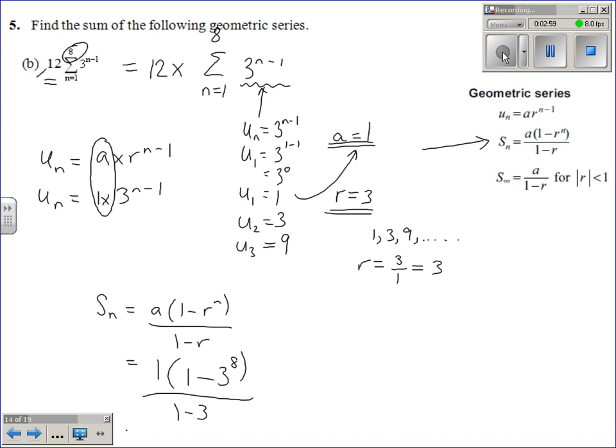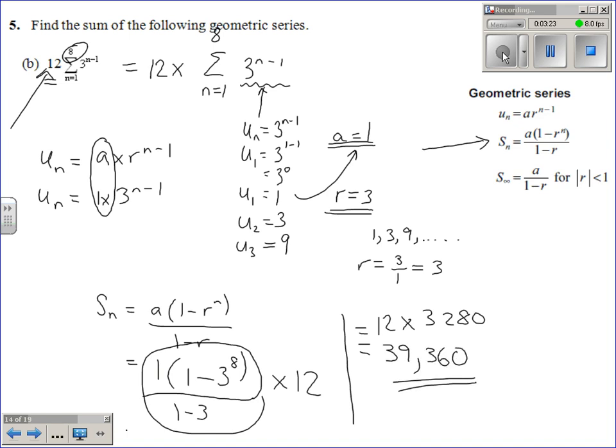Because here we've got this 12, that just wants us to times this whole thing at the end by 12 as well. So you're sort of working out your answer and then multiplying it by 12. So leave that 12 at the front and we're multiplying by 12. If you work out this whole thing here, you end up with 3,280. And do that on your calculator, you get 39,360 as your final answer.